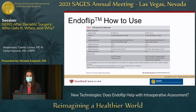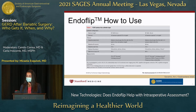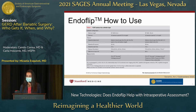There are two Endoflip catheters — an 8-centimeter and a 16-centimeter catheter — and they have different fill volumes and protocols for use. I personally use the 16-centimeter catheter for all esophageal assessment, predominantly during procedures for POEM, and the 8-centimeter for assessment of the pylorus during a gastric or pyloric POEM. The 8-centimeter is also frequently used at the EG junction.